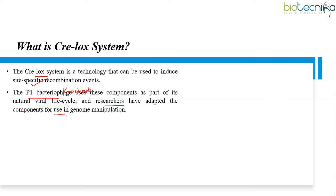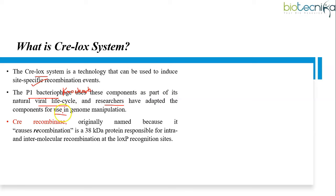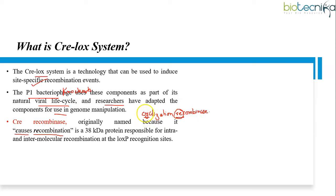CRE recombinase is originally named because it causes recombination, although later it is referred to as cyclization recombinase — C from cyclization and RE from recombinase. The DNA recombinase produced from the CRE gene of bacteriophage P1 is a 38 kilodalton protein responsible for intra- and intermolecular recombination at the LOX-P recognition site.